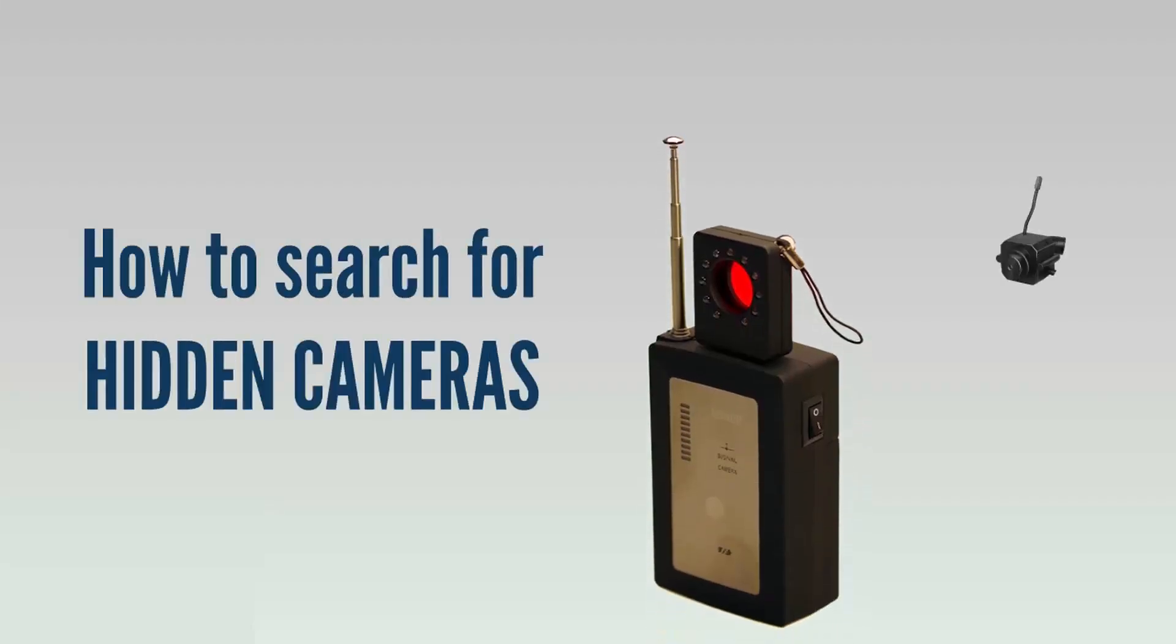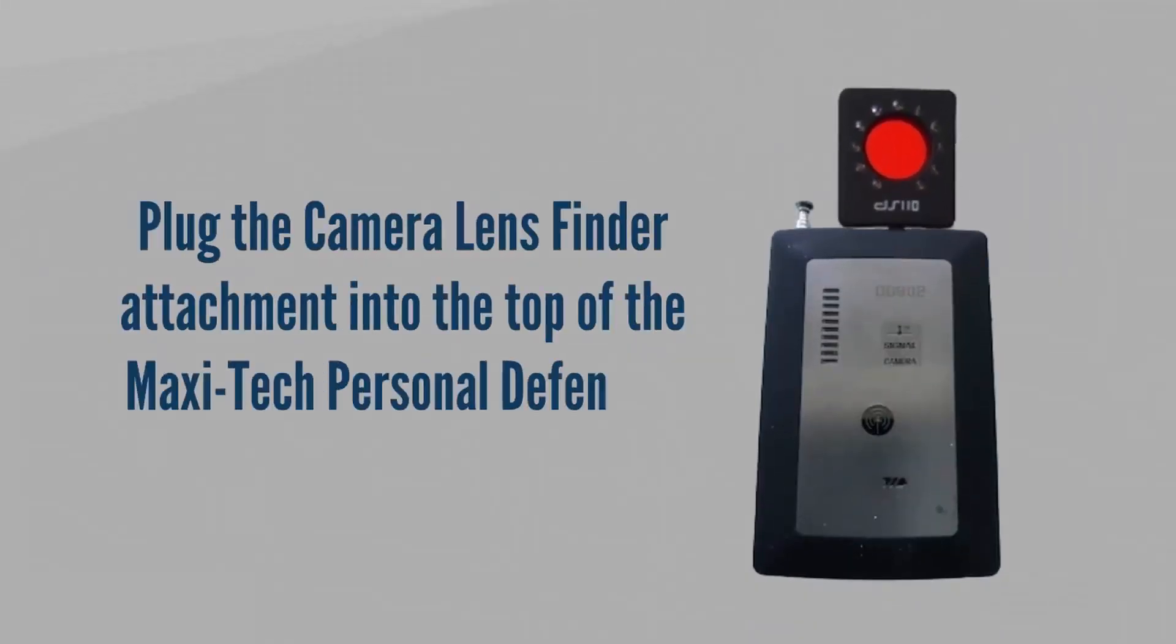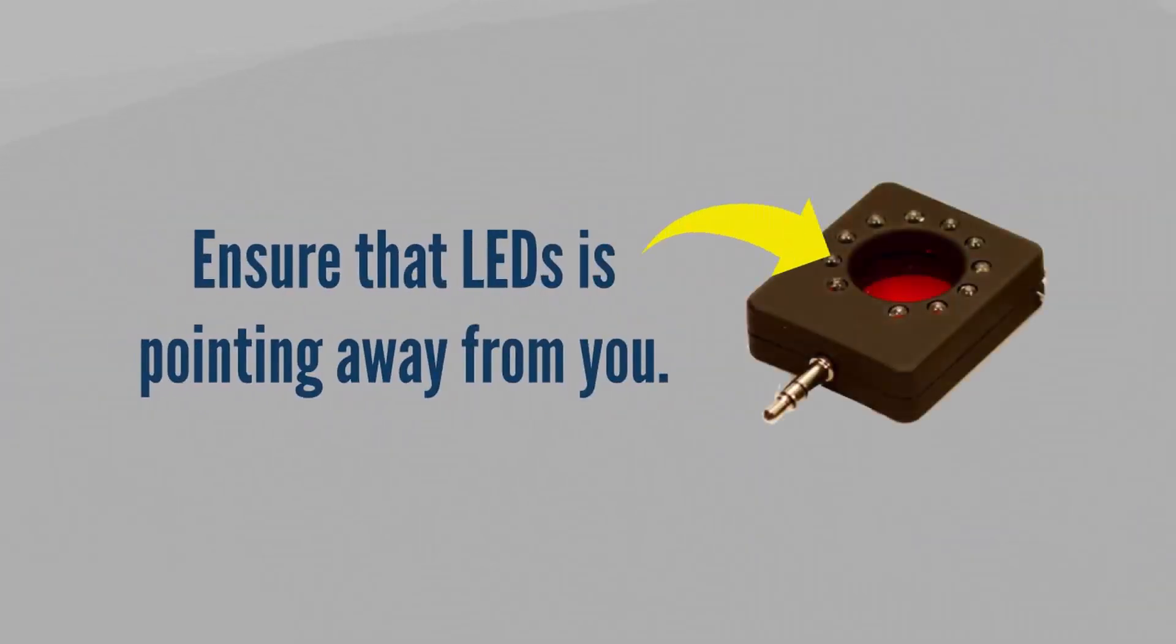Now to search and find hidden cameras. Simply plug the camera lens finder, the square adapter with red circle, attachment into the top of the MaxiTech bug sweep. The red pulsating LEDs should point away from you.